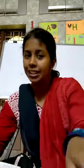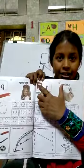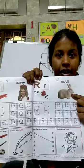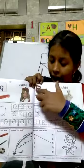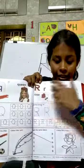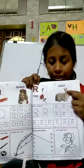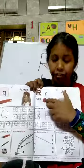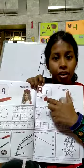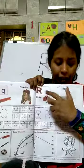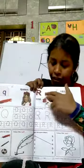Now let's see the words related to R. R for Rabbit. R for Rose. R for Rabbit. R for Rose.